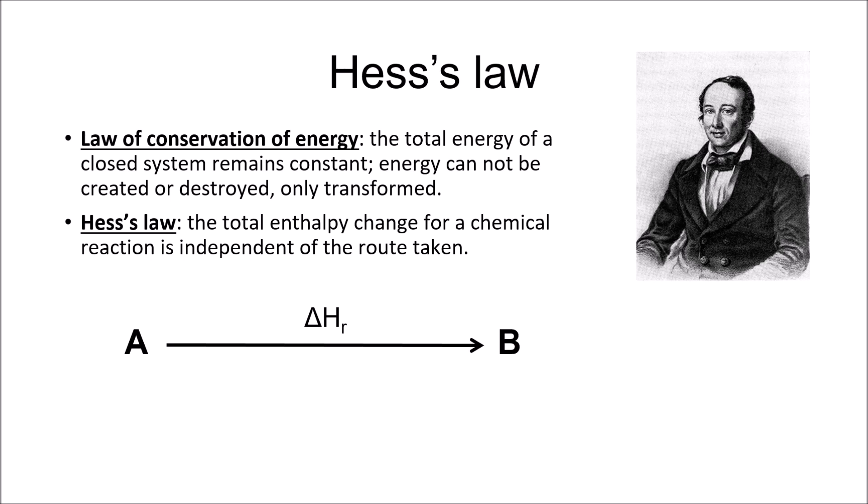Hess's law states that the total enthalpy change for a chemical reaction is independent of the route or pathway taken. It stands to reason that in a closed system, if A turns into B, the enthalpy change would be the same whether it goes directly from A to B, or if an intermediate C is formed first, which then turns into B, as energy is neither created nor destroyed.